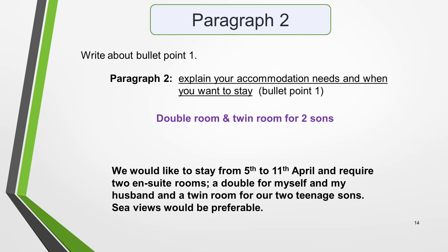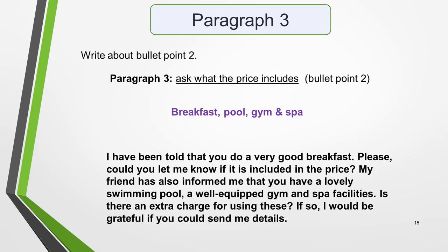The third paragraph should cover the second bullet point, which is to ask what the price includes. My idea for this was that I wanted to know about breakfast, the pool, the gym and the spa. You could write something like this: 'I have been told that you do a very good breakfast. Please could you let me know if it is included in the price. My friend has also informed me that you have a lovely swimming pool, a well-equipped gym and spa facilities. Is there an extra charge for using these? If so, I would be grateful if you could send me details.'